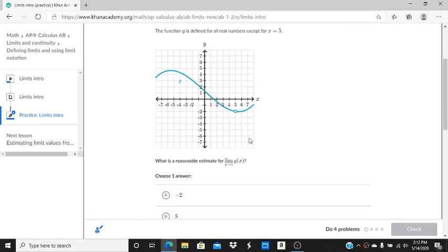Well, we can see that even though it's not defined at 5, it's approaching the y value negative 2 here from this side, and it's approaching from this side negative 2 as well. So a reasonable estimate for the limit is negative 2.